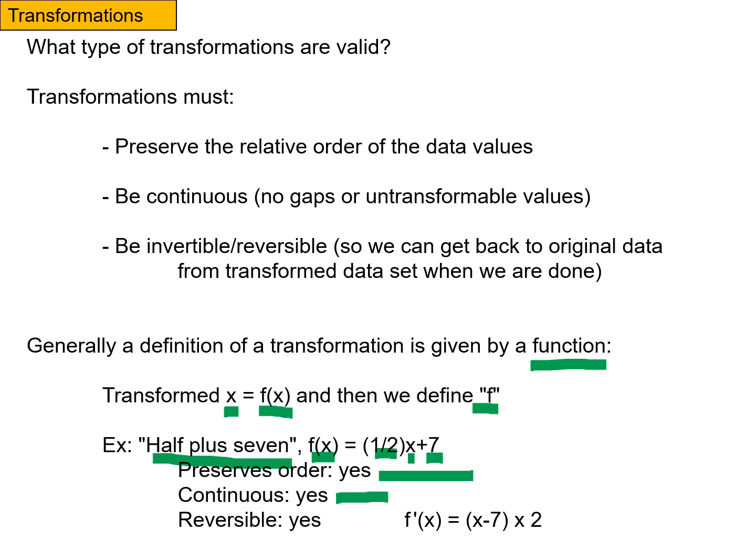And then is it reversible? Well, yeah, so if you have some transformed value, all you need to do is subtract seven and then multiply by two, and that gets you back to the original value. So a transformation like that would fulfill our definition of a valid transformation that fulfills those requirements.